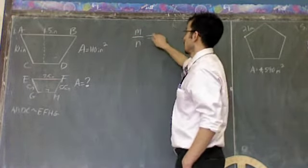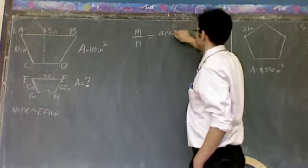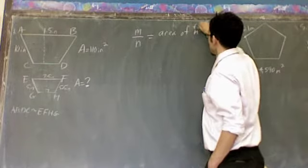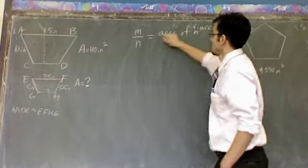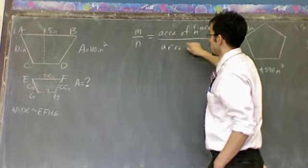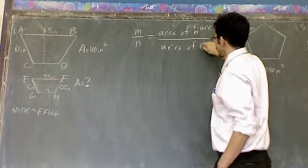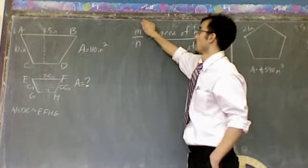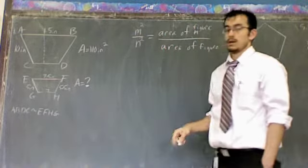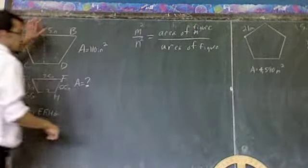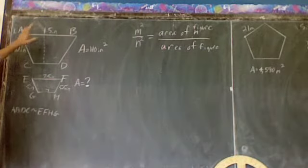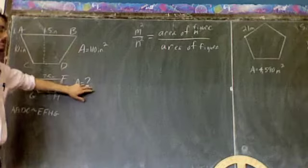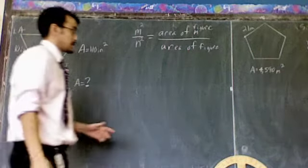Then what we learned is that the areas of those figures, area of figure m to area of figure n, will compare in this ratio where m is squared and n is squared. So basically it says if you take a measurement from here and square it, take a measurement from here and square it, it'll equal the area of this figure divided by the area of this figure. That's what the formula basically says.